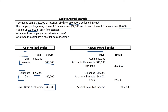Now let's think about the accrual method entries. We received $80,000 of cash, but we actually earned $120,000 of revenue because under the accrual method, we record revenue when we earn it, not when we actually receive the cash. This means we had a credit to revenue of $120,000, a debit to cash of $80,000, and a debit to accounts receivable of $40,000. So we have $120,000 of revenue, whereas the cash basis only had $80,000.